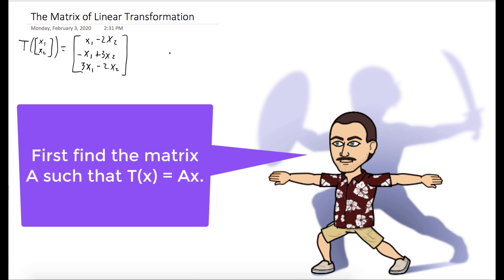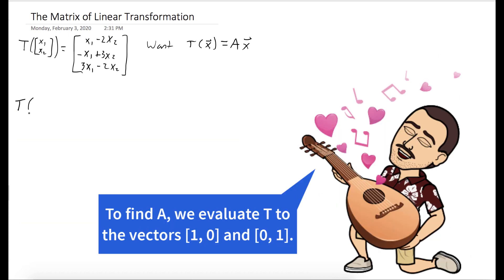What we want to do is express our transformation as a matrix A times the vector X. The way we find the matrix A is we look at what our transformation does to these elementary vectors, the 1,0 vector and the 0,1 vector. Those are going to be the columns of A.